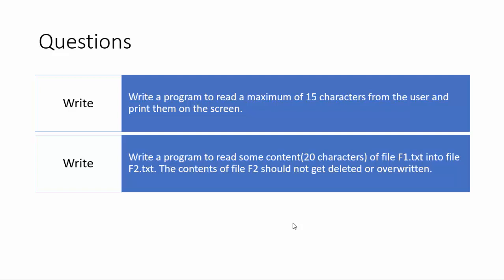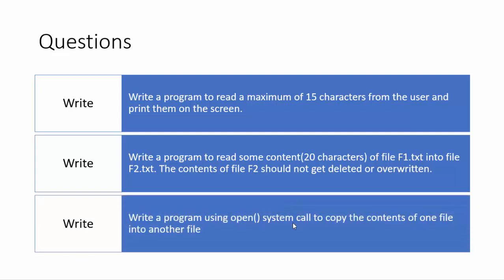Make sure that the file f2.txt — whatever content is there — should not be overwritten. The final question will be to copy the entire contents of one file into another. This is a star question because it is not straightforward — the challenge is that since you don't know how much content is there, how are we going to develop the logic to copy that content into another file.